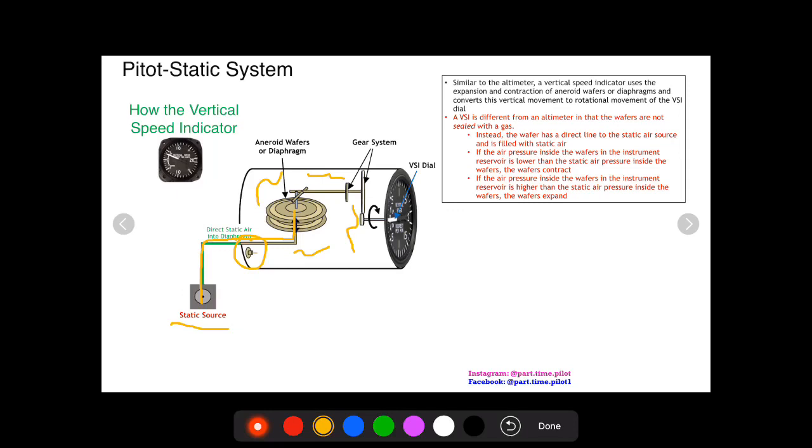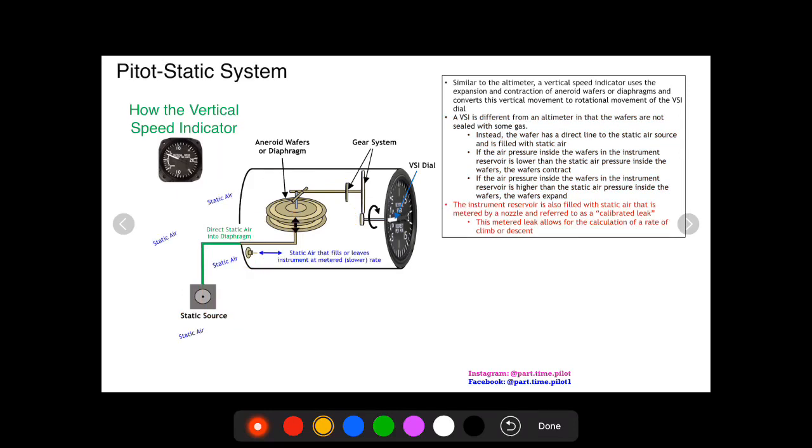So how do you get different static pressure on the outside than static pressure on the inside? Well, it all has to do with this nozzle down here. So the static air that goes into the static source is unmetered. It goes in, it's unhindered, it goes in at its normal rate, nothing's blocking it, it goes in and fills up that wafer. Now this nozzle is such that it is metered, and so the static air enters at a slower rate.